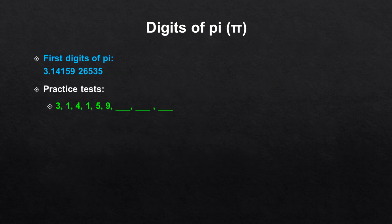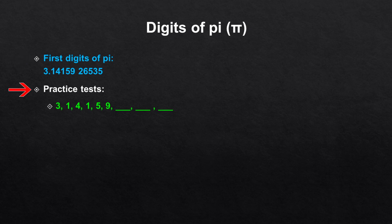The last sequence I want to show you in this video is the number pi. It is possible that a number series test consists of the first digits of pi. Therefore, I recommend you know the first digits of this number. Here you can see the first digits of pi: 3.1415926535. There are also websites with thousands of digits of pi, but the first few digits should be enough. And this is what a possible number series test with the number pi could look like.